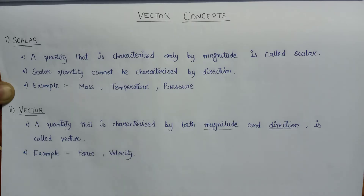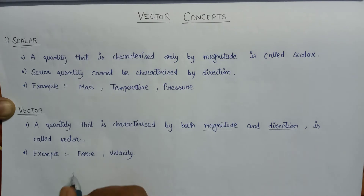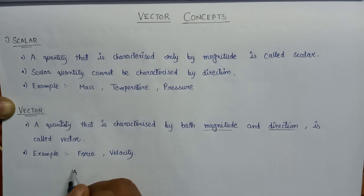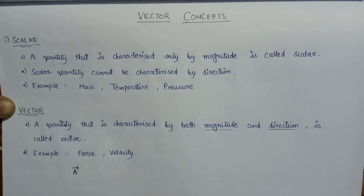Let us discuss the representation of both scalar and vector quantities. A vector quantity is represented by a letter with an arrow over the top of it. For example, if 'a' is a vector quantity, we put an arrow over the top of the letter 'a', and it then represents the vector quantity A.